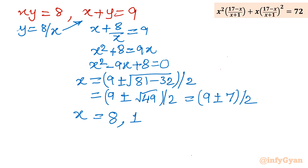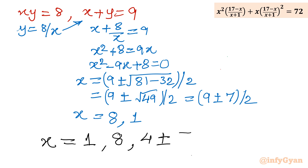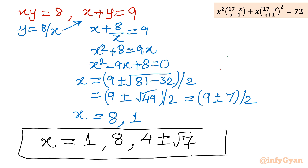So from method number one, the unconventional or extraordinary method, we have four real solutions: x equals 1, x equals 8, and x equals 4 plus or minus √7.